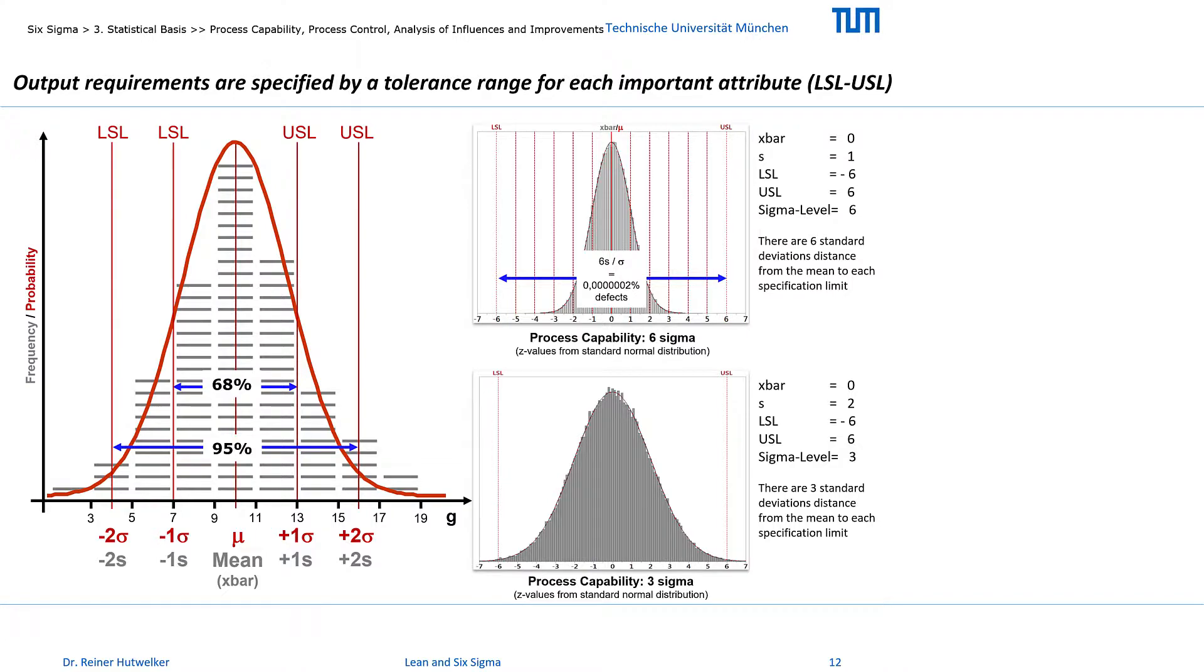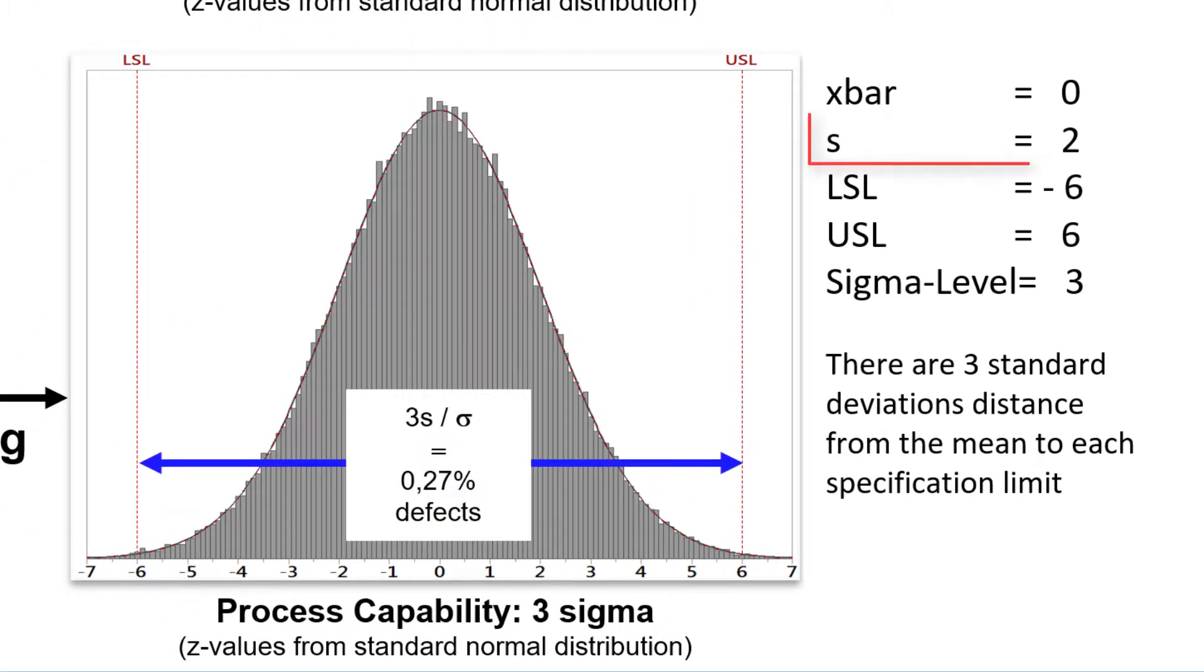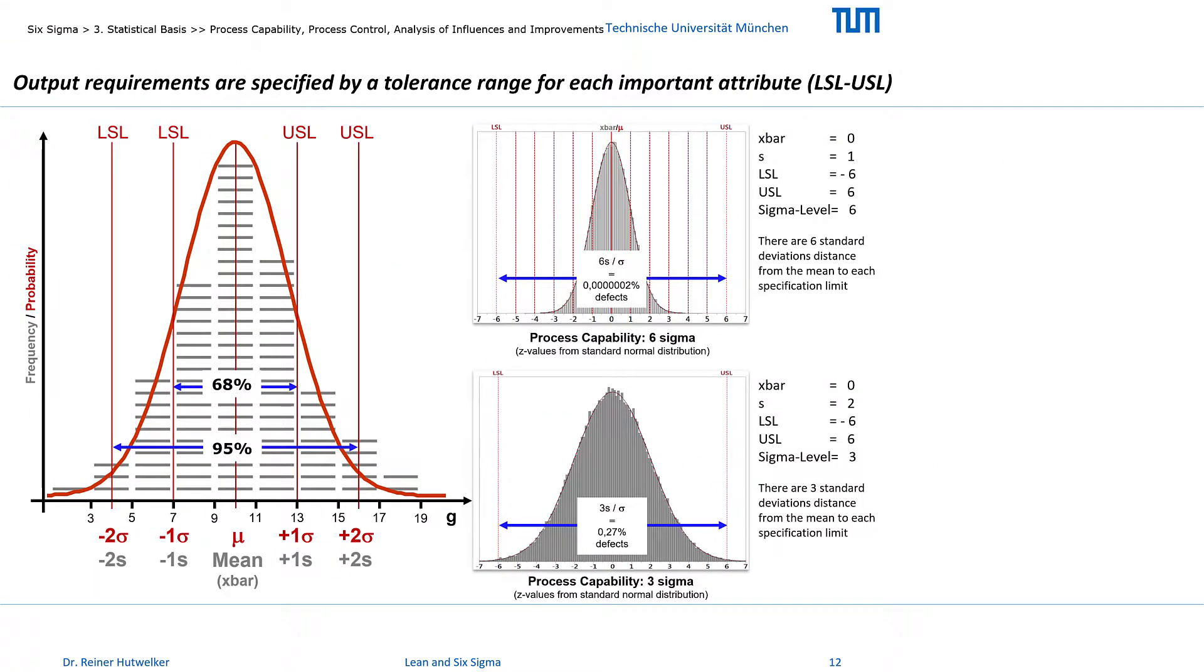Now compare these relationships with the simulated 3 sigma process. The extreme values of this distribution are already outside the specification limits, and it can easily be evaluated that the 3 sigma process is less capable than the 6 sigma process. But why do we call this capability 3 sigma, and not 3 standard deviations?